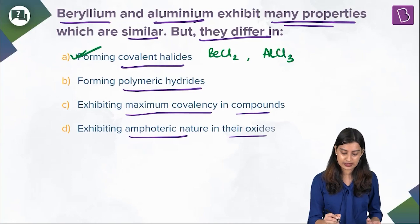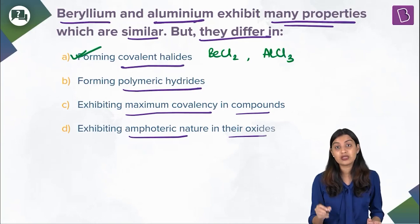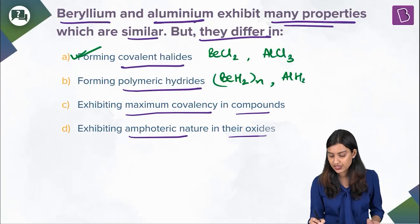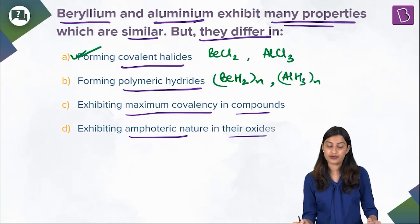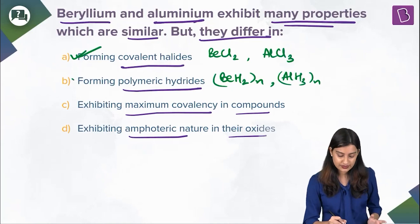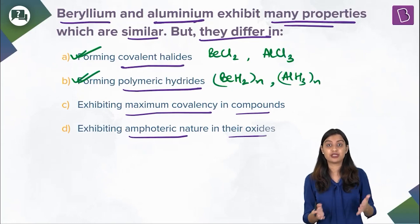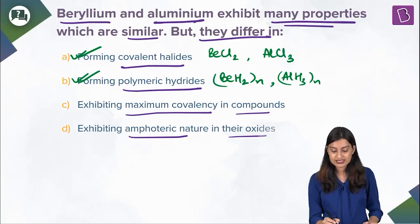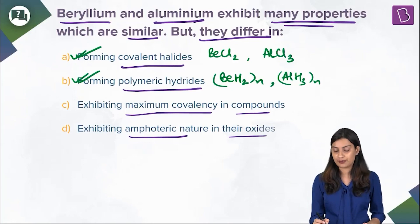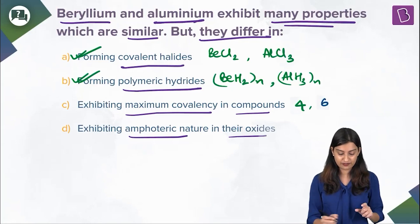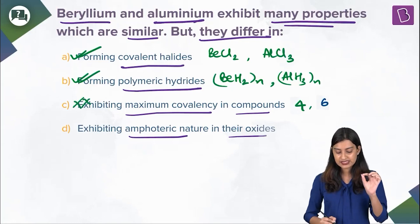Forming polymeric hydrides: BeH₂ exists as a polymer and similarly AlH₃ also exists as a polymer. These two do not exist as monomers — they exist as polymers generally. So this is again a similar property between beryllium and aluminium. Then, exhibiting maximum covalency in compounds: for beryllium the covalency is four, and for aluminium the covalency is six. So this is where they differ — they do not exhibit the same maximum covalency in their compounds.